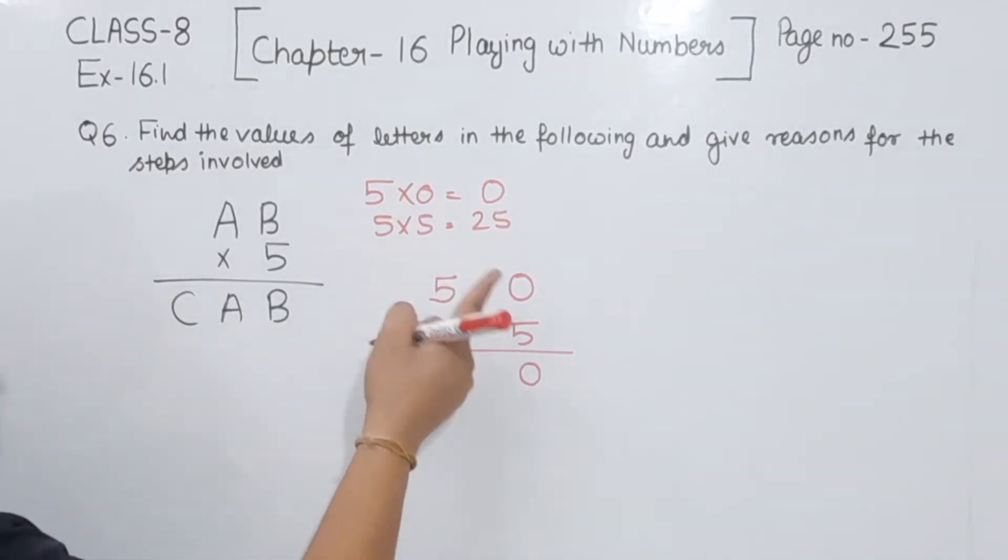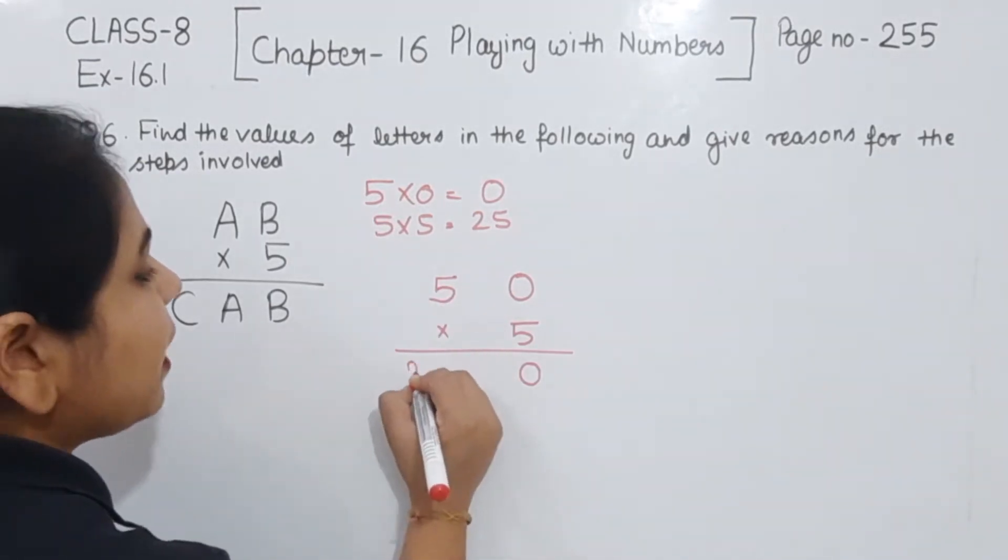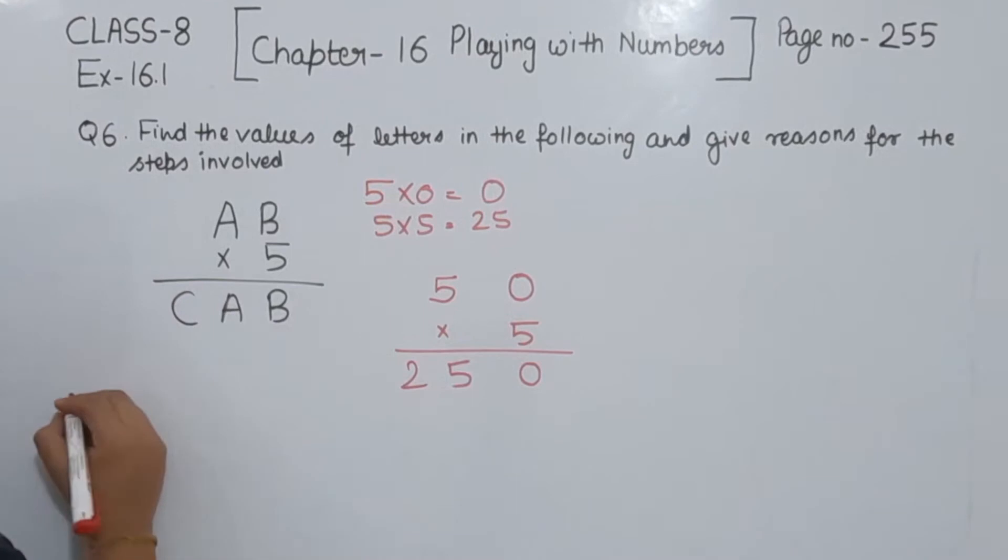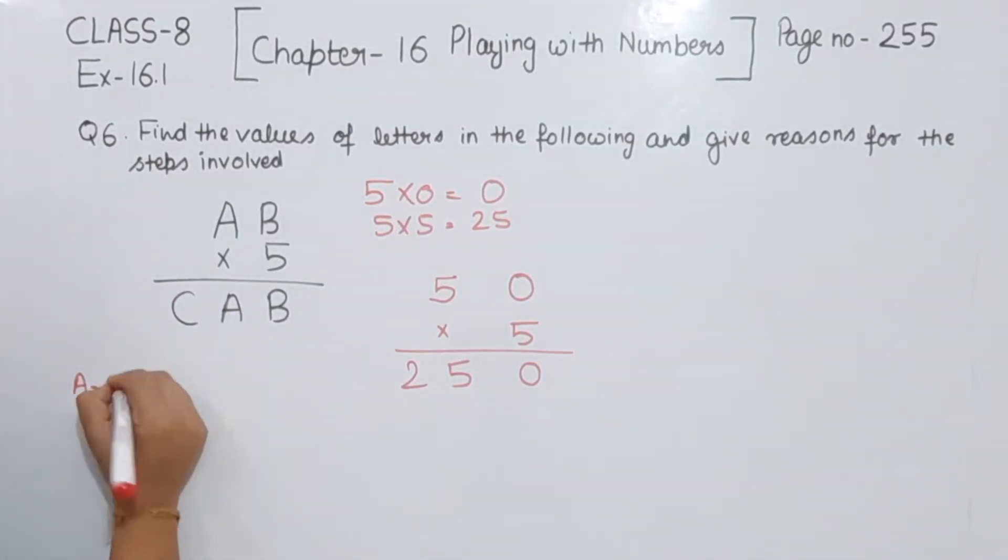We should not have carry here. If I am going to multiply this one by 0, I will not have carry here. So 5 fives are 25. This one we are having 25 here. So the value of A we are having is 5, the value of B we are having as equal to 0, and the value of C we are having as equal to 2.